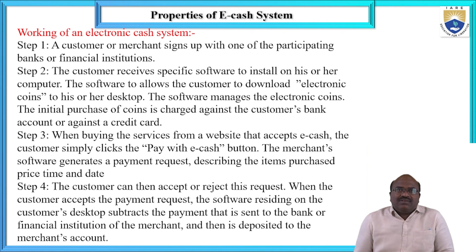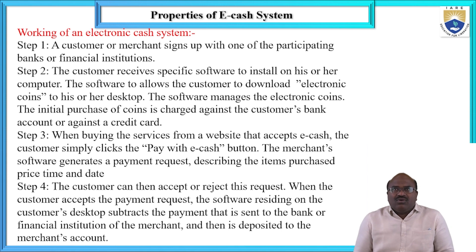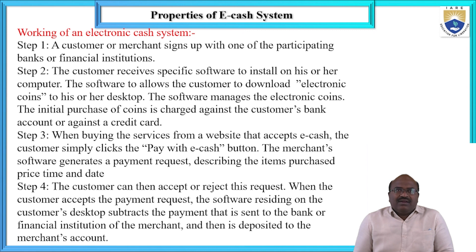Point two: the customer receives specific software to install on his or her computer. The software allows the customer to download electronic coins onto their desktop. The software manages the electronic coins. The initial purchase of the coins is charged against the customer's bank account or credit card. The specific software must be installed on the computer before any operation can be done, and then the coins are automatically generated.